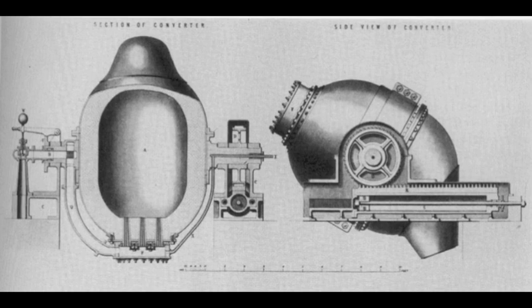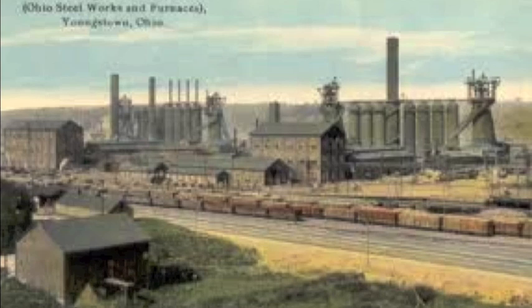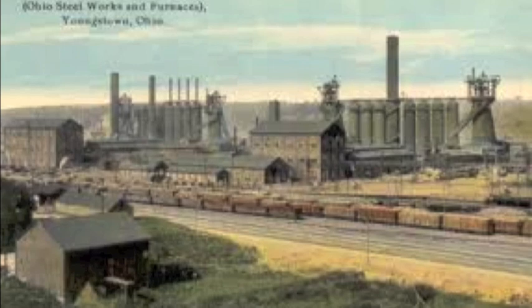The diagram shown here is a side view and cross-section of the Bessemer converter. This process allowed for 3 to 5 tons of iron to be converted into high-strength steel in as little as under 20 minutes — a process that used to take days beforehand.